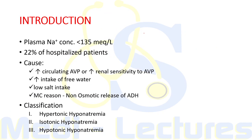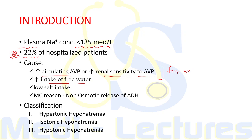Hyponatremia is defined as plasma sodium concentration less than 135 millimoles per liter. It is a very common disorder, occurring in around 22% of hospitalized patients. The main cause is increased circulating AVP or increased renal sensitivity to AVP, along with increased intake of free water. AVP retains free water, leading to dilution and hyponatremia. Rarely, hyponatremia can occur due to low salt intake in the diet.